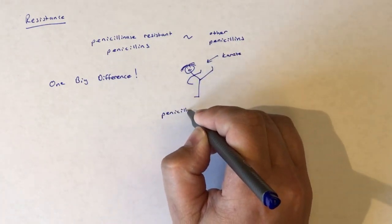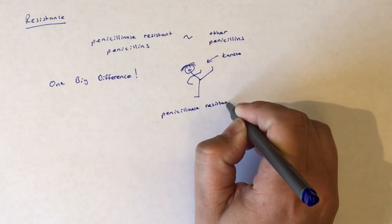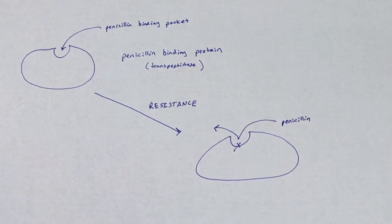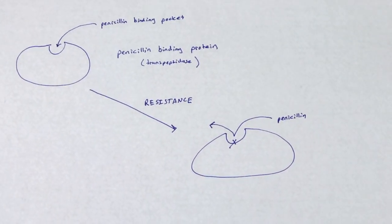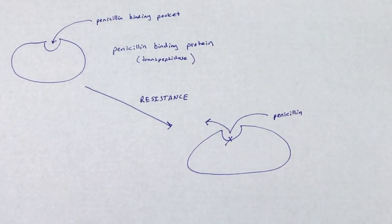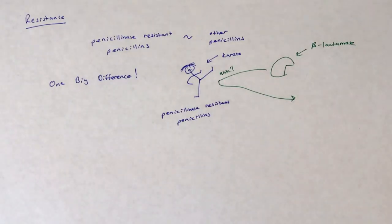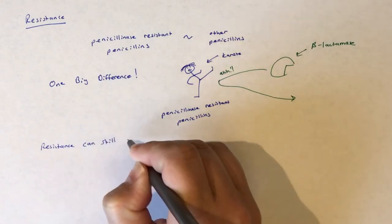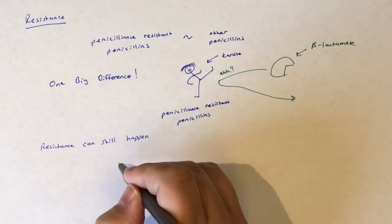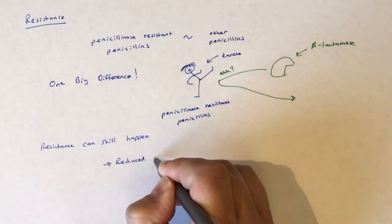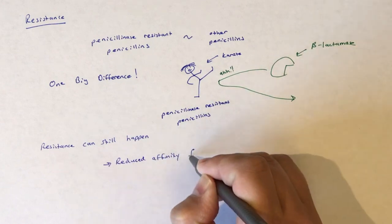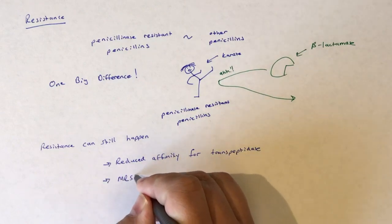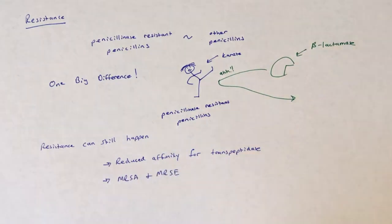However, resistant phenotypes to penicillinase-resistant penicillins can still arise. These resistances are mainly tied to a reduced affinity for the penicillinase-resistant penicillin in the binding pocket of transpeptidase. This resistant mechanism is a common culprit in the development of methicillin-resistant Staphylococcus aureus, or MRSA, and methicillin-resistant Staphylococcus epidermidis, or MRSE. For a review on other possible mechanisms of resistance that all penicillins share, please review the video on penicillins.